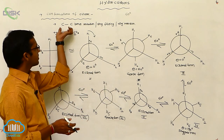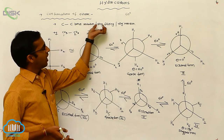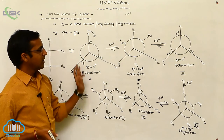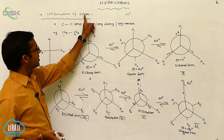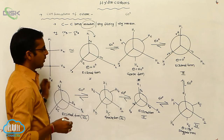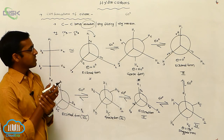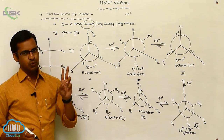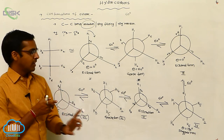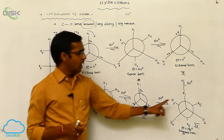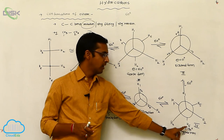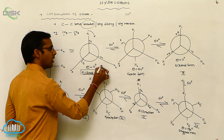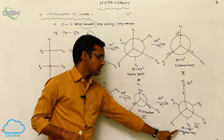The C-C bond undergoes rotation, ring flipping, or inversion process, giving different types of structures. In conformations of ethane, only the rotation process is applied. Generally, the staggered form is more stable than the eclipsed form. The staggered form is stable, while the eclipsed form is unstable due to the presence of steric strain — all hydrogens are in close proximity, causing repulsions. Steric strain is absent in the staggered form, making it stable.